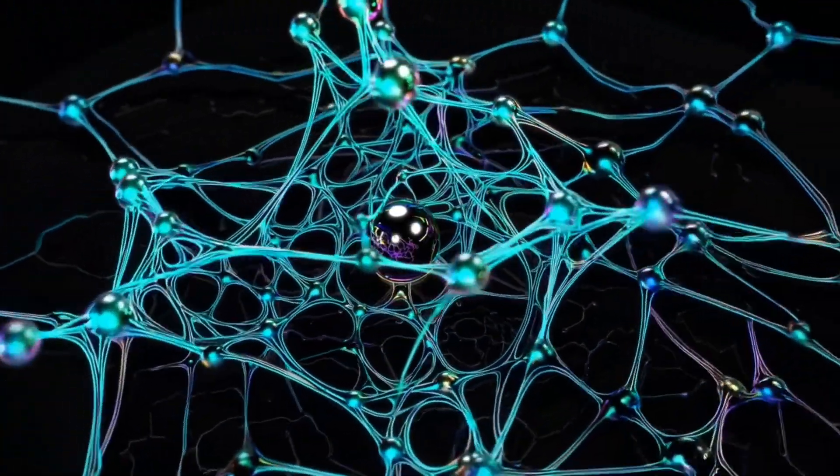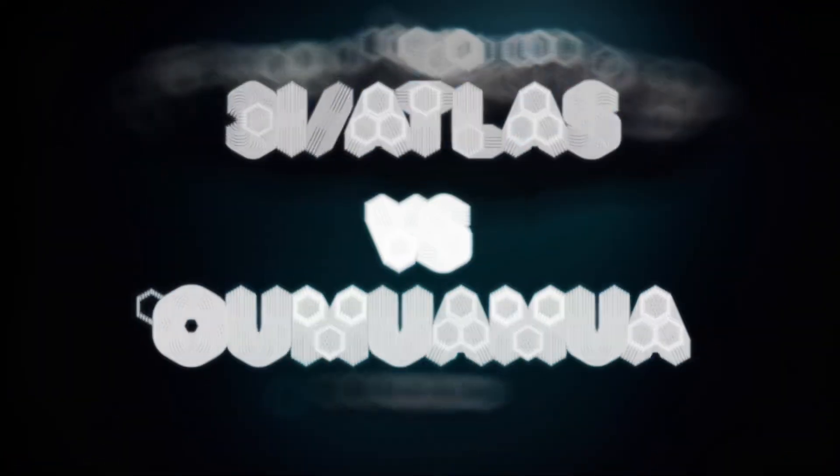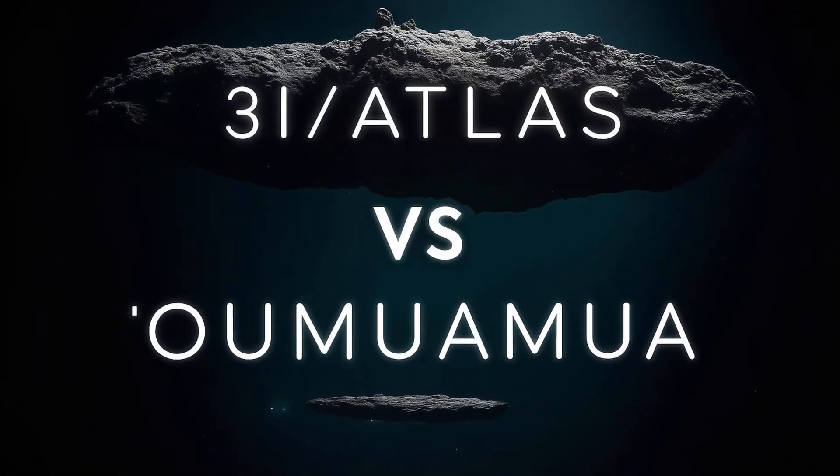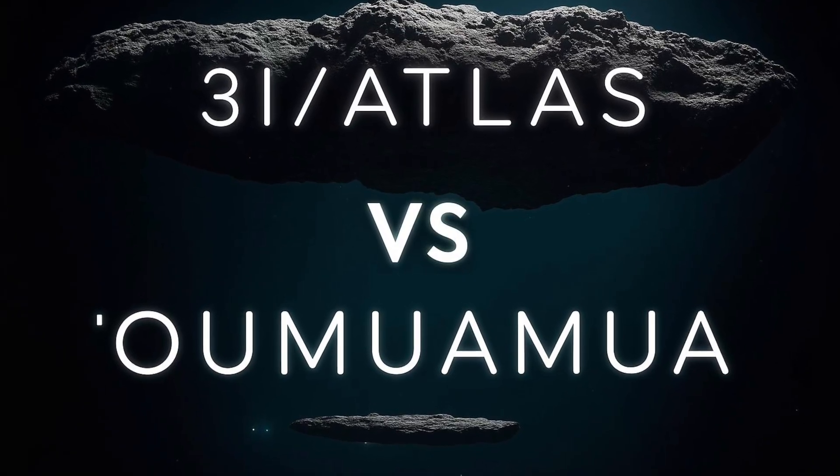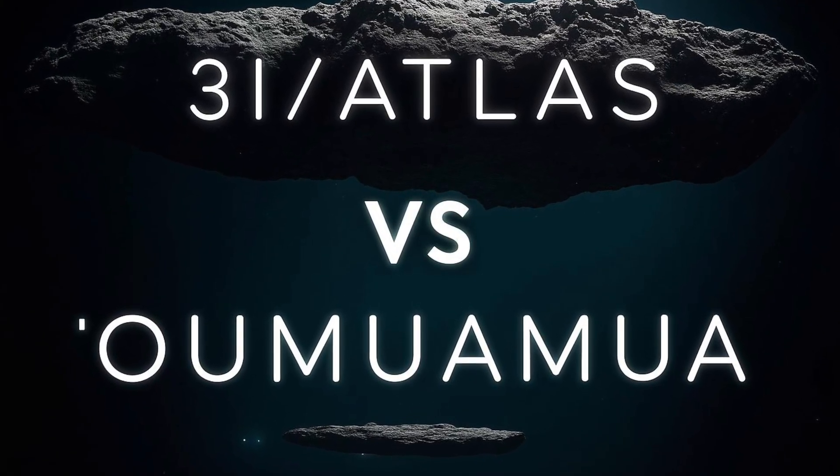After Jupiter, the final exit phase. 3I Atlas will leave the solar system with an escape velocity of approximately 60 kilometers per second. In 10,000 years, it will traverse the Oort cloud. In 50,000 years, it returns to interstellar space.